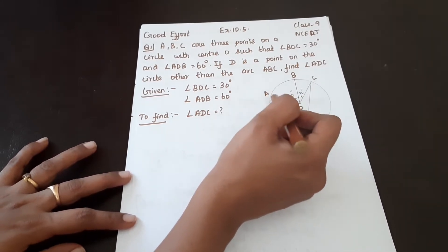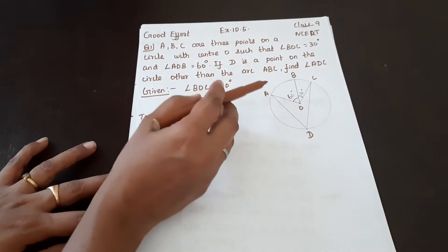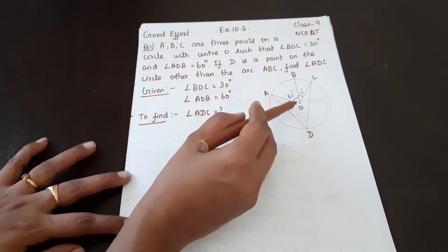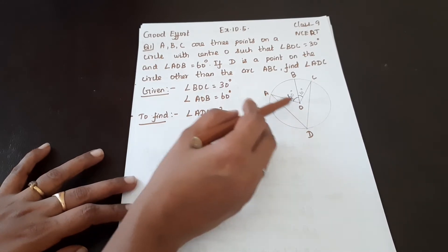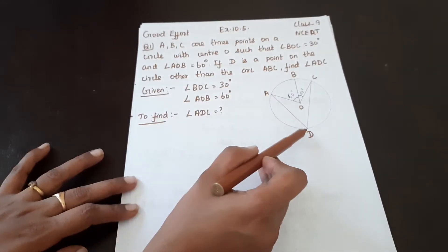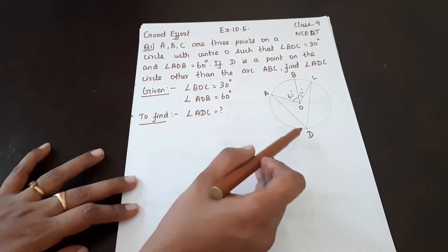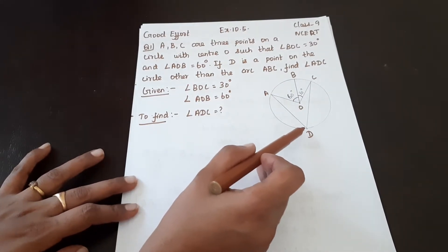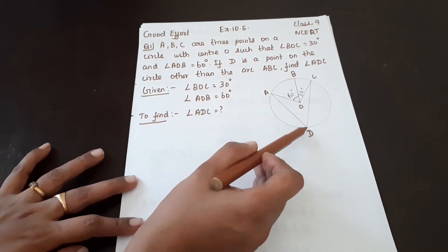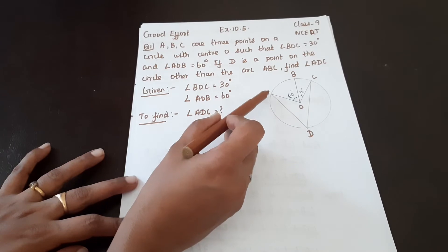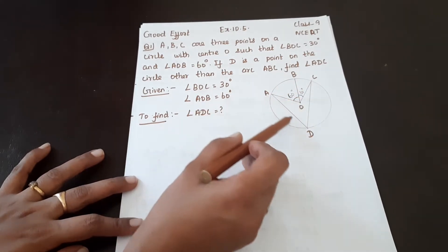ABC is a point on the circle — it is the minor arc. D is apart from ABC, other than the arc ABC. That is why the minor arc is ABC, and D is on the major arc. AC is a point on the minor arc, and D is joined.